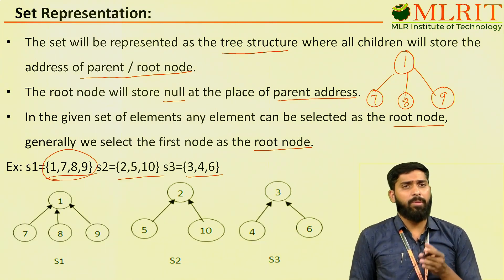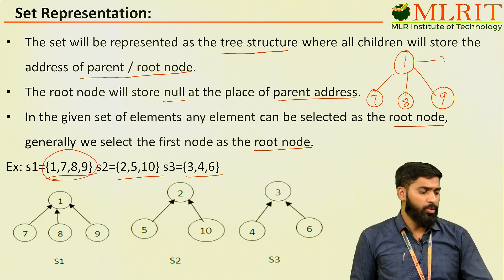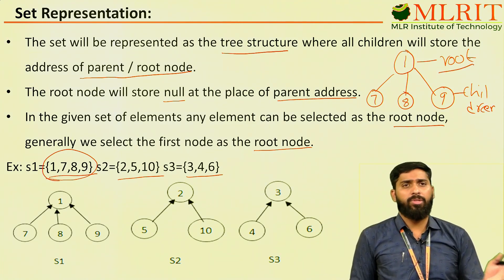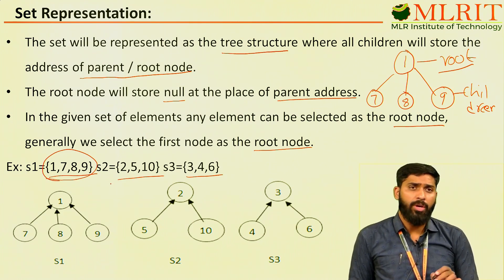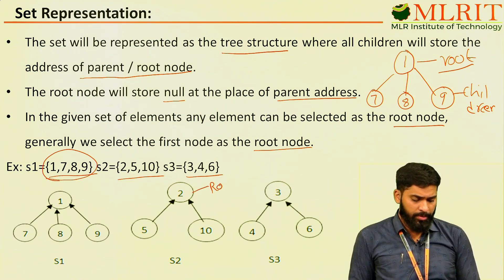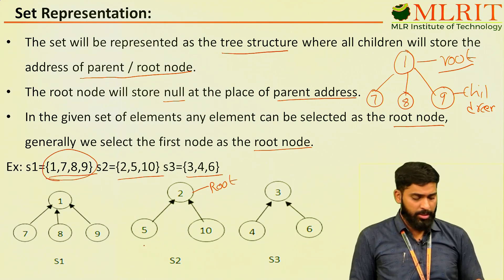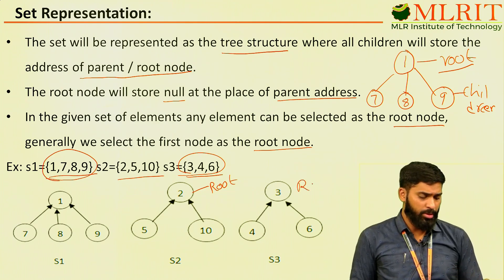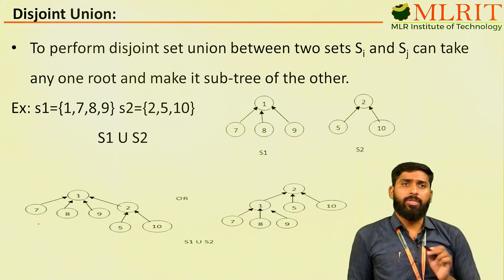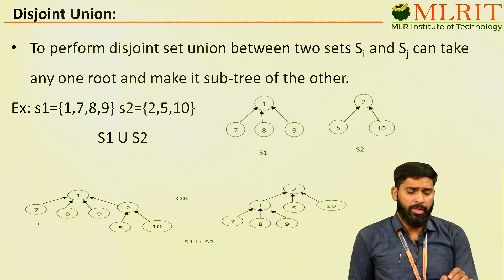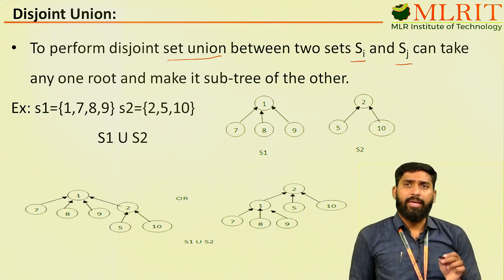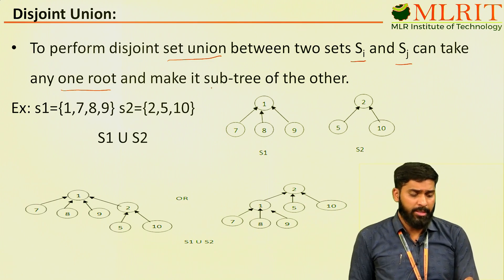So, the set is represented in the form of a tree — root with remaining elements as children. For disjoint set union, to perform union between two sets Si and Sj, we can take any one root and make it a subtree of the other.